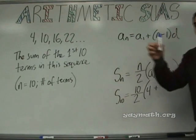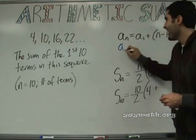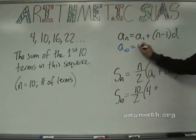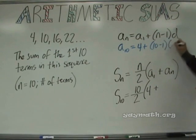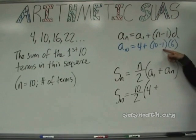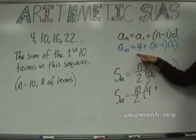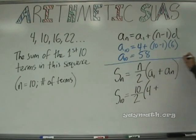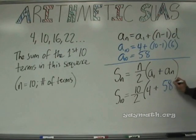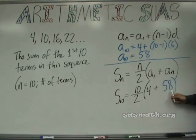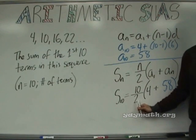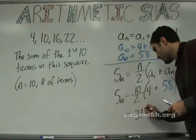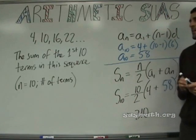So A10 equals 4 plus 10 minus 1 times 6. D is the difference between the terms. Four plus — what's 10 minus 1? Nine. Nine times 6? 54. 54 plus 4? 58. Good job. It is 58. And now plug it in: 58. What is 4 plus 58? 62. 62 times 5? 310. The sum of the first 10 terms is 310.